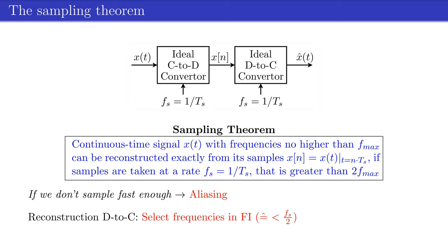Ideally, the reconstruction by the d-to-c converter selects only frequencies inside the fundamental interval, which are frequencies up to fs over 2.